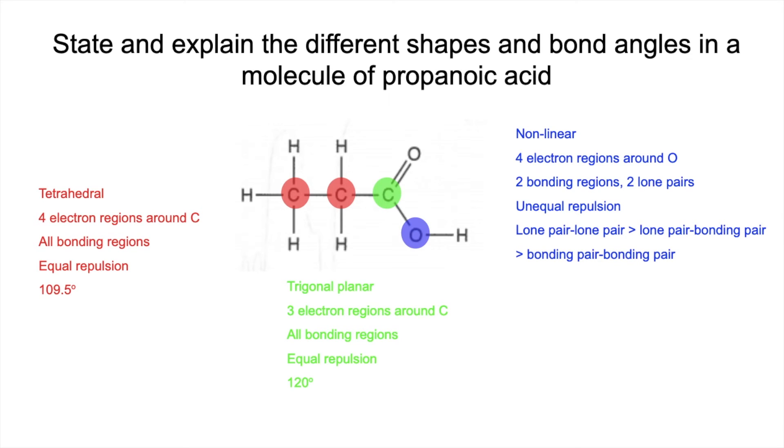So the angle associated with that is 104.5 degrees. Your starting angle for four electron regions is 109.5 degrees, which we saw here, but we subtract 2 times 2.5 degrees, so 5 degrees in total for those two lone pairs.